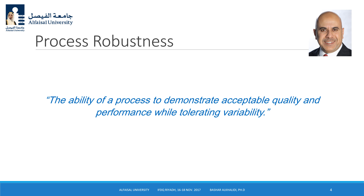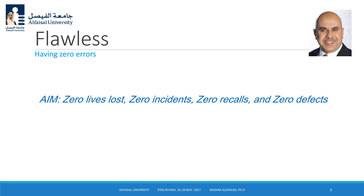What is process robustness? Process robustness is to demonstrate acceptable quality and performance while tolerating variability. Variability exists, but we need to tolerate it by setting acceptable limits. Flawless means zero defects, zero errors, zero lives lost for the product, zero incidents, and zero recalls — though achieving this is quite difficult. All products of good quality should aim to these four points, but there are still limitations in practice.